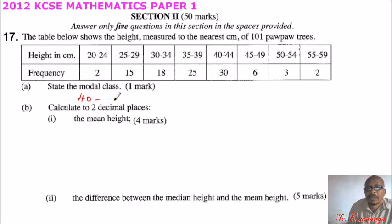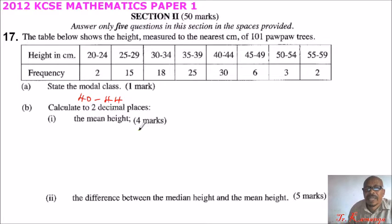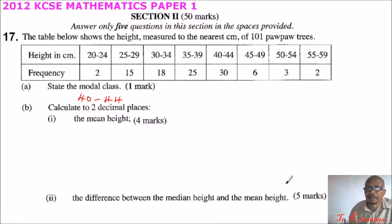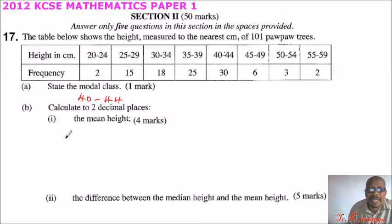Part (b): calculate to two decimal places. Roman numeral (i): the mean height — you get 4 marks. Roman numeral (ii): the difference between the median height and the mean height — 2 marks. To get the mean, we use the formula: mean equals summation of xf divided by summation of f.